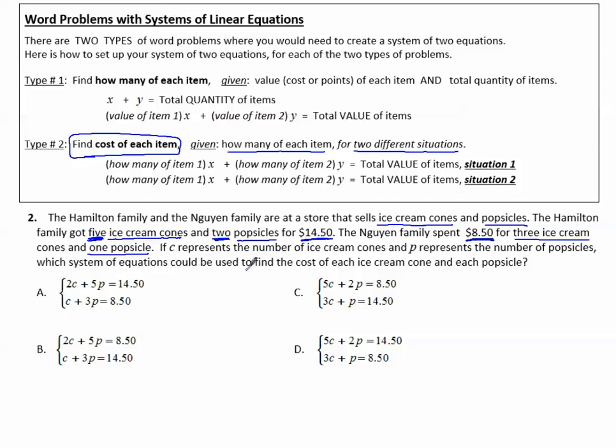If C represents the number of ice cream cones and P represents the number of popsicles, which system of equations could be used to find the cost of each ice cream cone and each popsicle? So notice that we're finding the cost of each type of item.